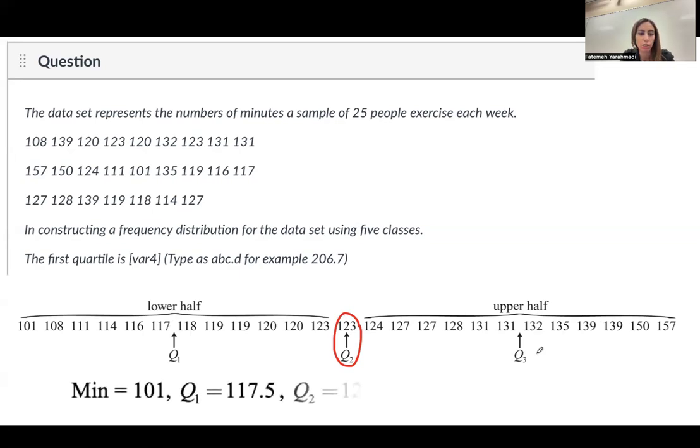The minimum value is 101. The first quartile is the mean of these two data. This is the average, 117 plus 118 divided by 2, gives you 117.5. And as we know, the median of the data is second quartile, 123. And finally, the second half of the data, after finding the median, you're basically finding the third quartile. And the maximum value is 157. So, since the question says, what is the first quartile? The first quartile is 117.5.